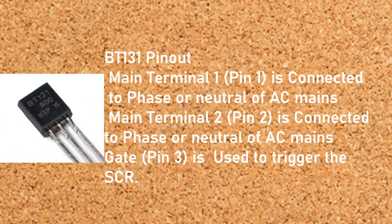BT-131 pinout. Main terminal 1, pin 1, is connected to phase or neutral of AC mains. Main terminal 2, pin 2, is connected to phase or neutral of AC mains. Gate, pin 3, is used to trigger the device.